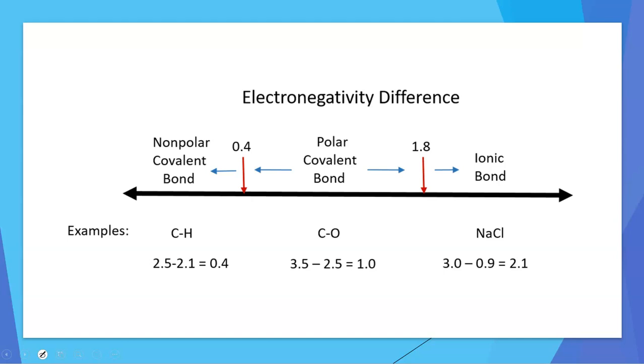On one end, which would be an electronegativity difference of 0, you've got a totally non-polar covalent bond. This would be if you had something like a carbon-carbon bond, for example. So, you've got two atoms. They have the exact same electronegativity. They are going to share the electrons in that bond perfectly equally. The two electrons in that bond will spend half of their time on one carbon and half of their time on the other carbon.